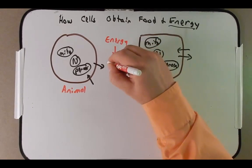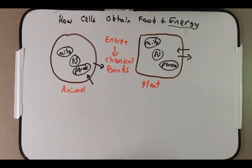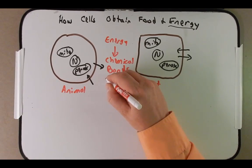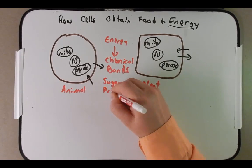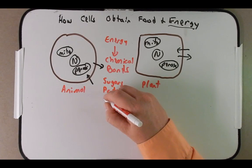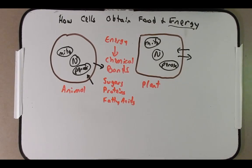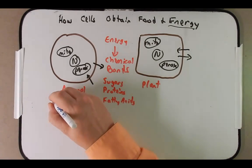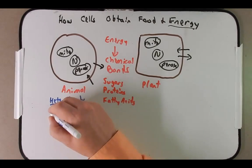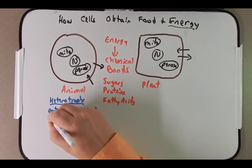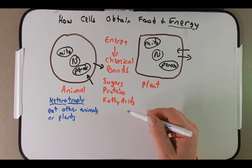Energy comes from chemical bonds. There's a great deal of potential energy in these chemical bonds, and usually what that means is various sugars like glucose. We'll talk a lot about glucose, but also proteins that are broken down into amino acids can be used, as well as fatty acids, to generate these chemical bonds that are going to be used to get energy for the cell. Animals are heterotrophs — they have to eat other animals or plants to get these chemical bonds in the form of sugar, proteins, or fatty acids to be generated into energy.